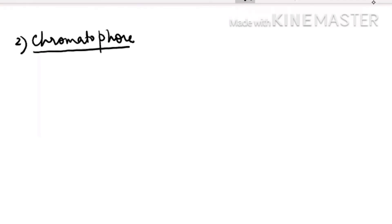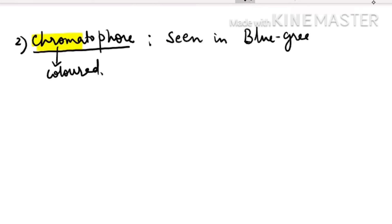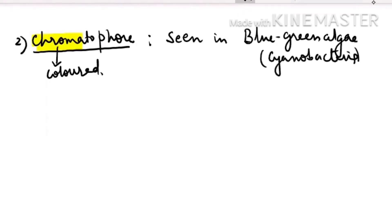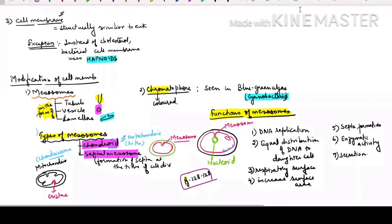The other infolding of the cell membrane is the chromatophore. The word 'chroma' means color, indicating these are colored infoldings. Chromatophores are seen in blue-green algae, also known as cyanobacteria, which perform oxygenic photosynthesis. So there are two modifications of the cell membrane: mesosome and chromatophore.